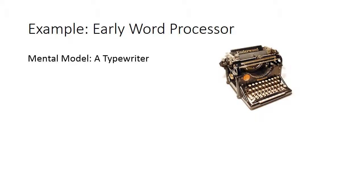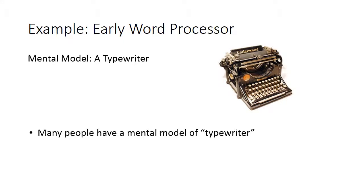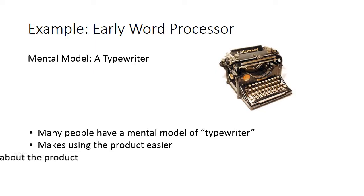The first word processors were simplistic but helpful — since you knew what a typewriter was and were told this is like a typewriter, it made the product easier to use. However, on the negative side, thinking of a word processor as a typewriter limits how you think about the product. You're missing a whole lot. Over the years, the mental model of the word processor has evolved tremendously — from a simple way of entering and editing text to the advanced functions we have now.